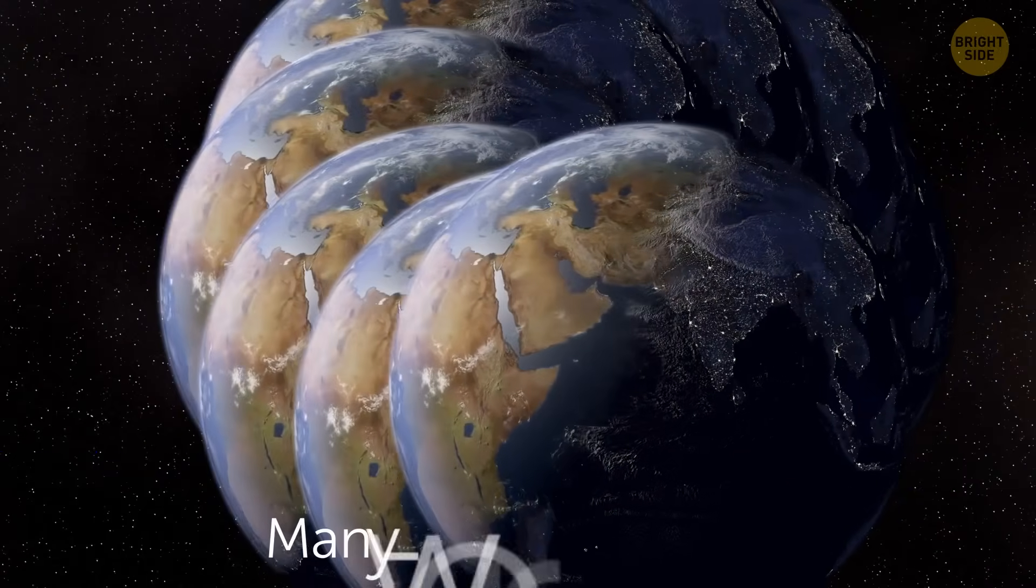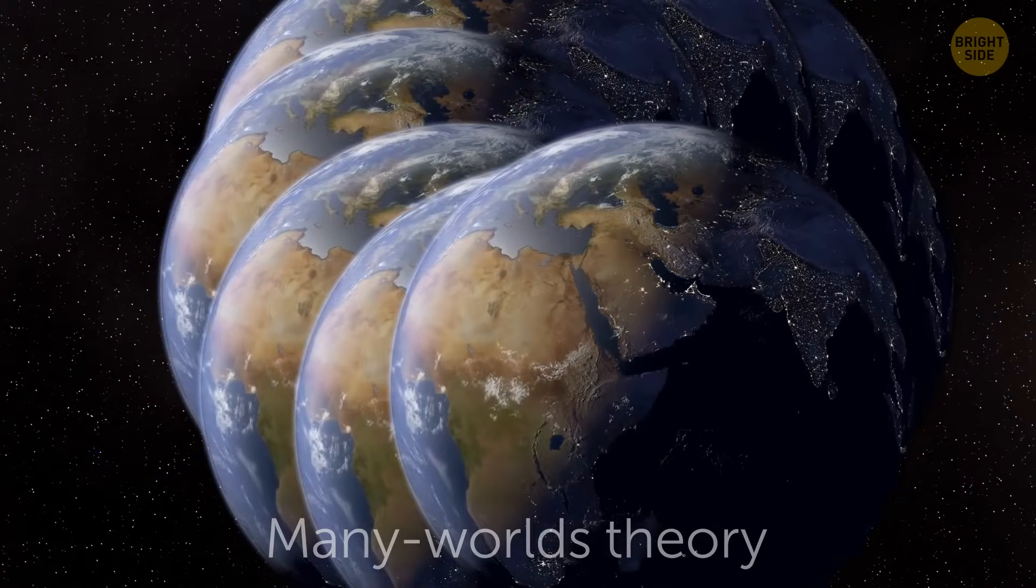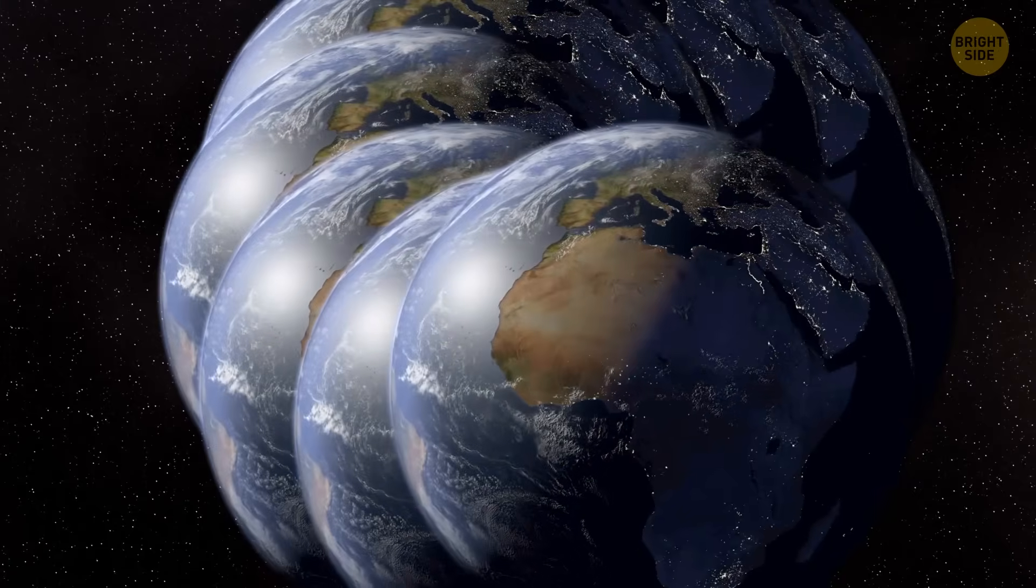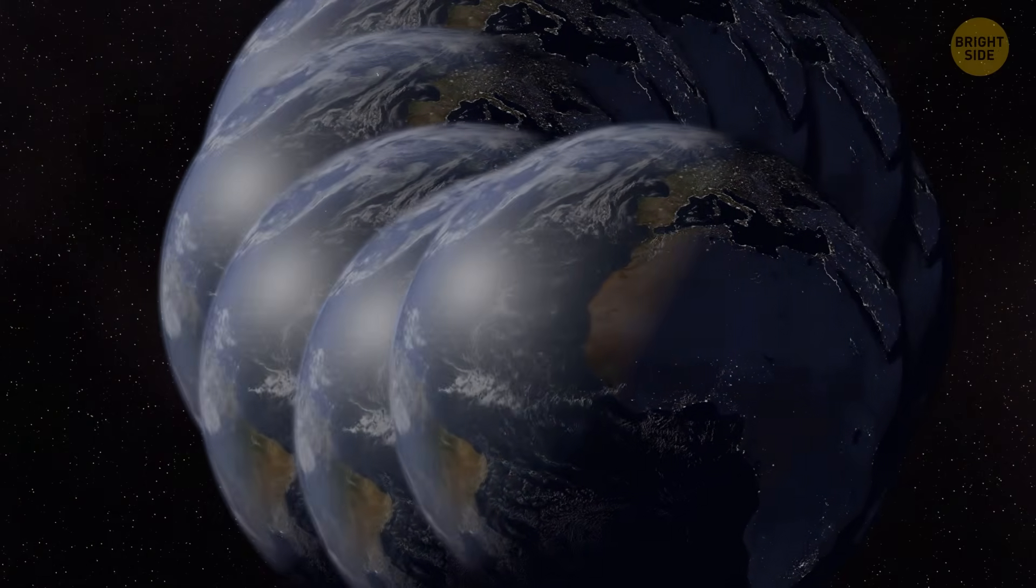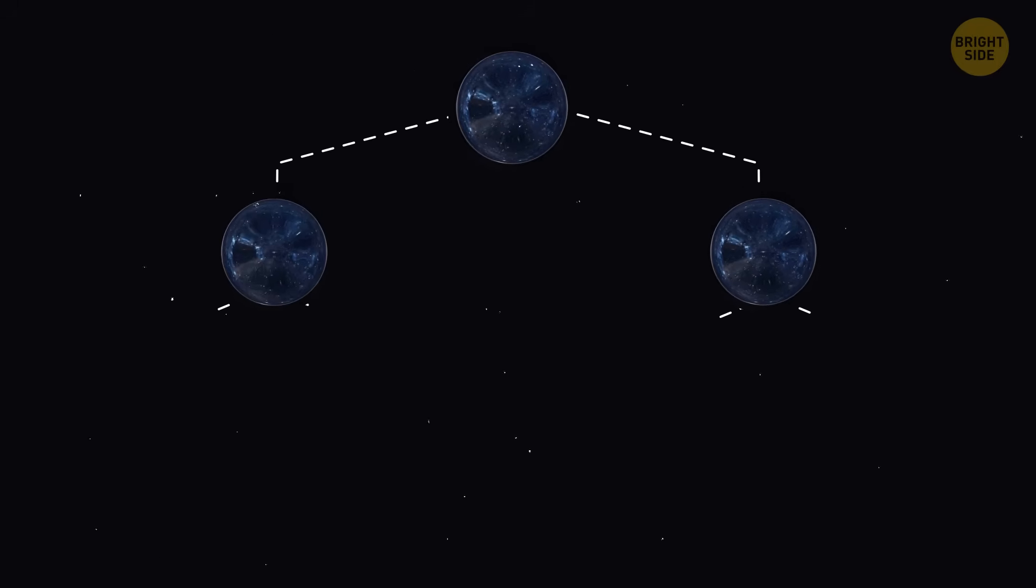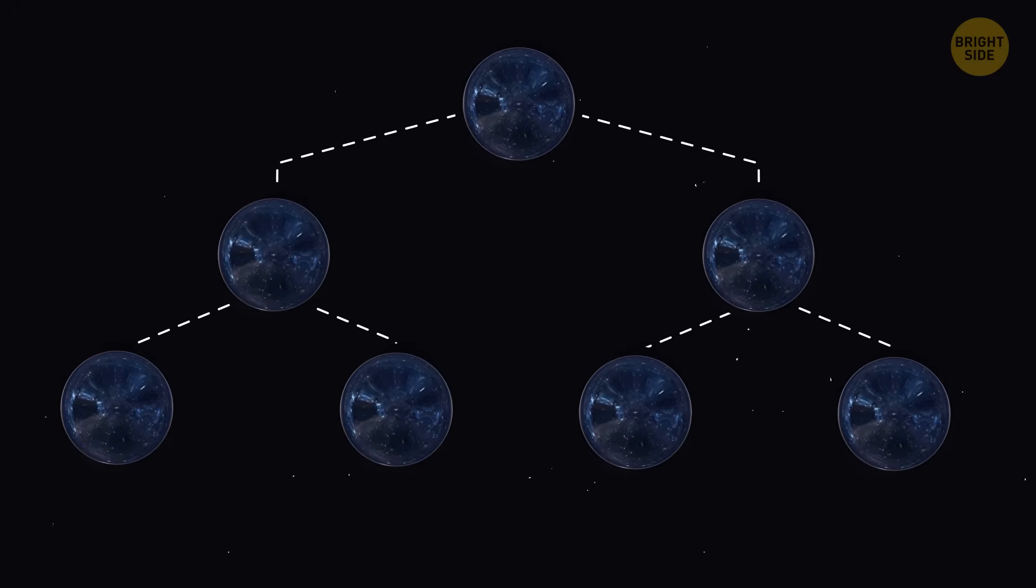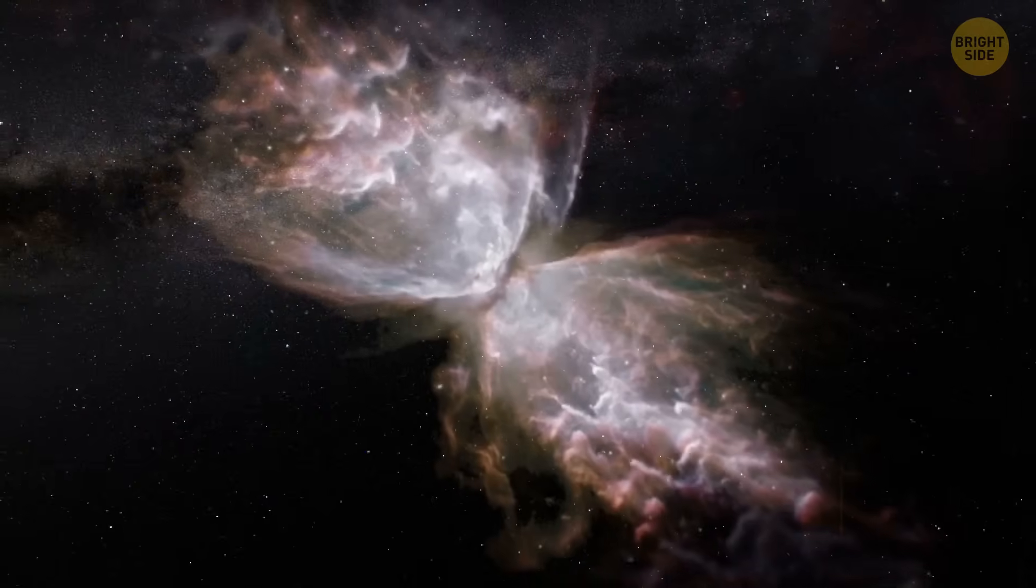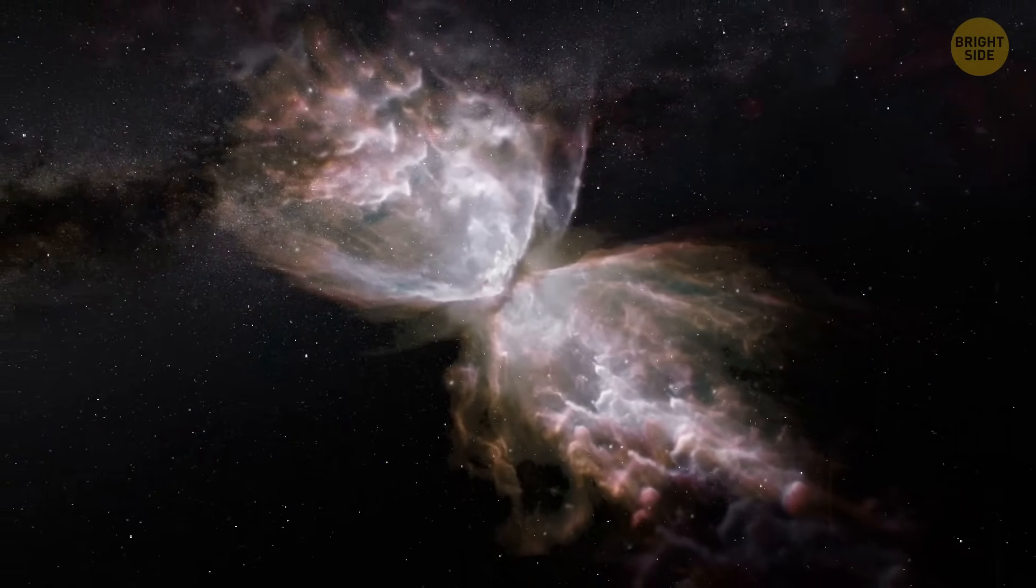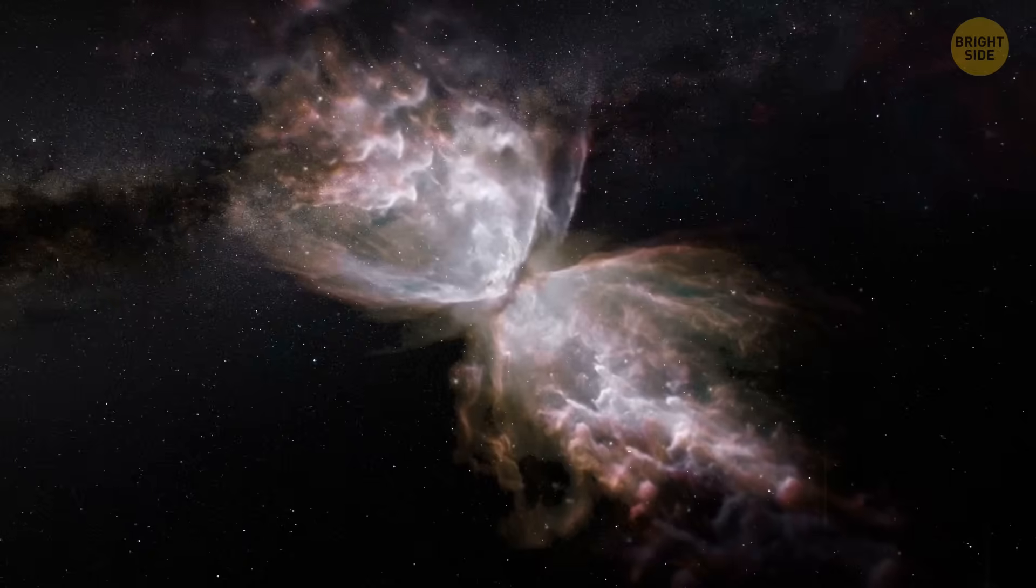Now, there's this theory called the many-worlds theory that says, whenever we observe one outcome, another universe pops up where a different outcome becomes real. It's like our universe acts as a giant tree, constantly branching into countless versions of itself. These alternate universes can't mingle, though, so you wouldn't even know if there are a bunch of other yous living slightly, or totally, different lives.